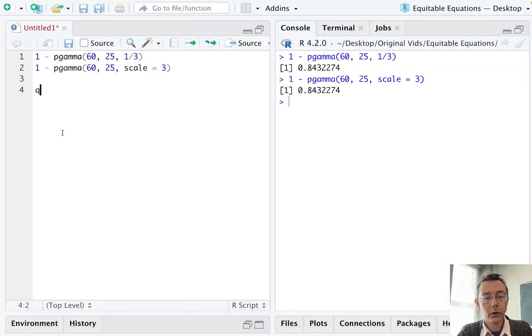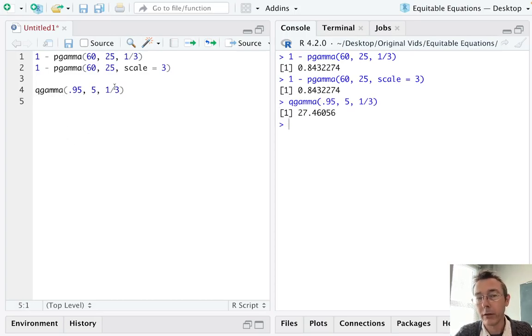We need qgamma of the percentile we're interested in, 0.95. Notice that percentile is given as a decimal. Then we specify the parameters. In this case we're interested in only 5 calls, and as before, lambda equals 1 third. And I'll hit command enter to get the answer there. It is about 27.5 minutes.